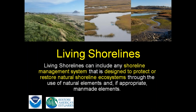Living shorelines present an alternative to hardening. They can include any shoreline management system designed to protect or restore natural shoreline ecosystems through the use of natural elements and, if appropriate, man-made elements. This is accomplished through strategic placement of plants, shell, stone, sand or mud fill, and other structural and organic materials. NOAA notes in their 2015 guidance document that living shorelines is a broad term encompassing a range of shoreline stabilization techniques along estuarine coasts, bays, sheltered coastlines, and tributaries. A living shoreline incorporates vegetation or other living natural elements alone or in combination with harder shoreline structures, for example oyster reefs, for added stability.